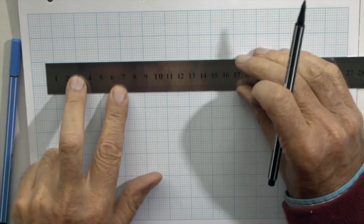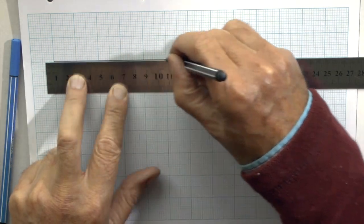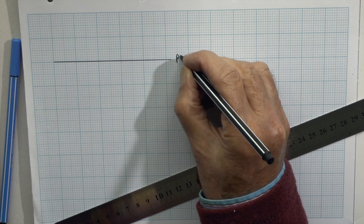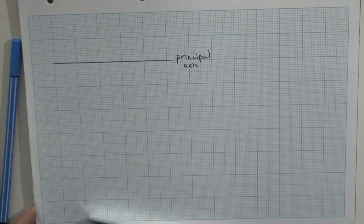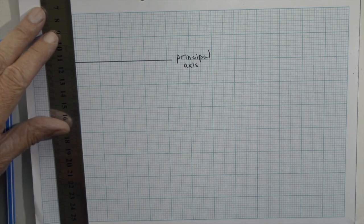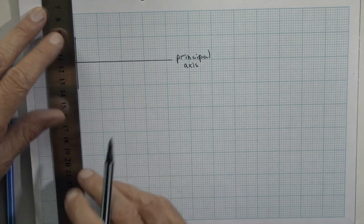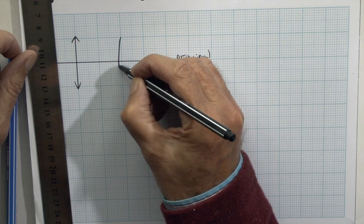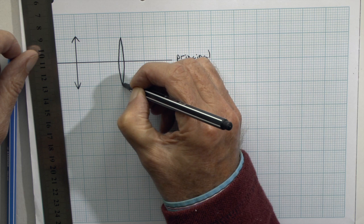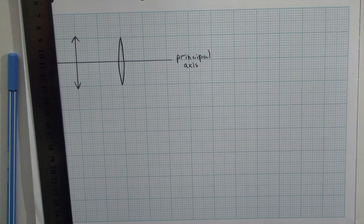When we draw the lens on a diagram it is usual to draw it on a line called the principal axis. That is the line which is passing straight through at right angles to the centre of the lens. The lens is usually drawn easily like this, or you can if you wish draw it like a convex lens.